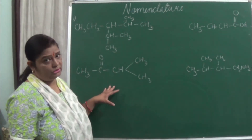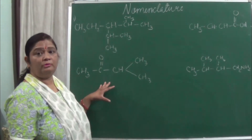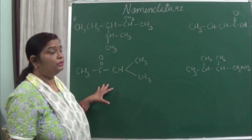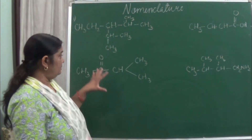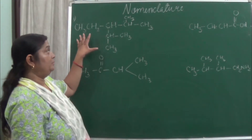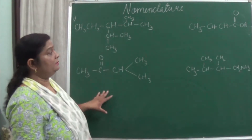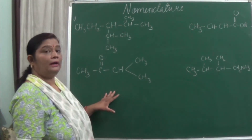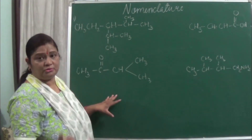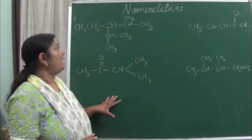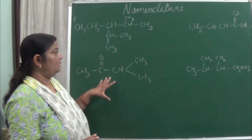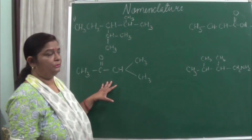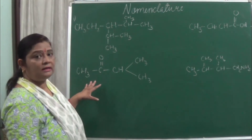You have to know all the functional groups given in the NCERT, and you have to know the priority also. Before doing the nomenclature, just read the rules one time. I will be taking all the rules and using them in naming these compounds. By these examples, I am going to explain all those rules. So let us start now.